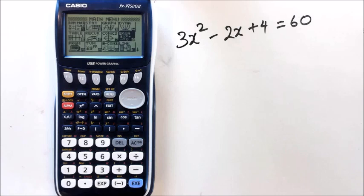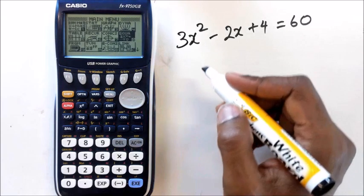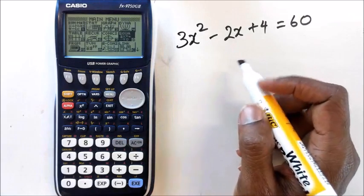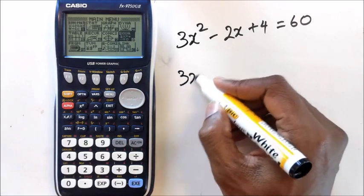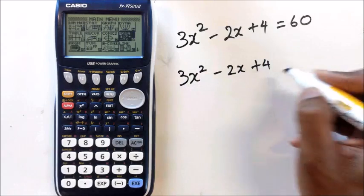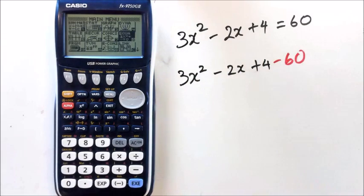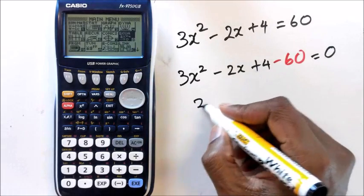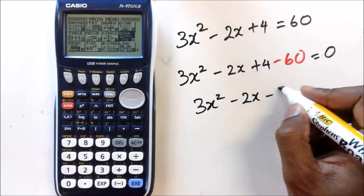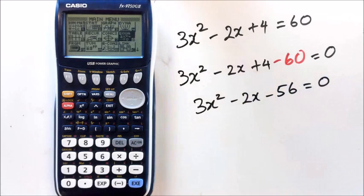Now, there's a couple of ways of doing this. The first method I'm going to show you is through the equation mode, and then I'm going to show you how to do it in the graph mode as well. With the equation mode, you have to do a little bit of rearrangement. So you need to rewrite this as 3x squared minus 2x plus 4, and when your 60 moves across, you've got minus 60 equals 0. So what you end up with is 3x squared minus 2x minus 56 equals 0.